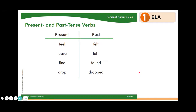Remember, an action word is called a verb. Some verbs describe things happening now, and others describe what happened in the past. If you're writing a personal narrative about memories, should you use present or past tense verbs in your sentences? You should use past tense verbs when writing about memories.